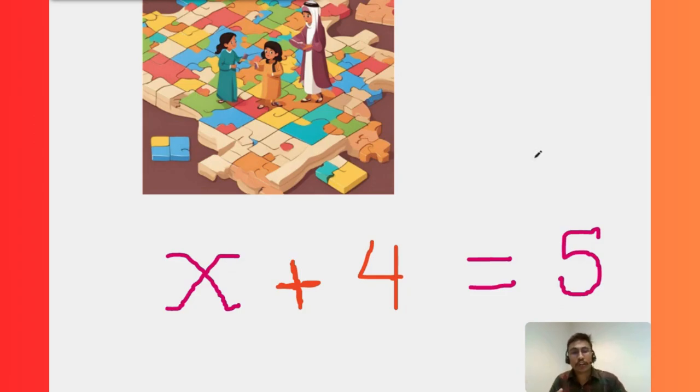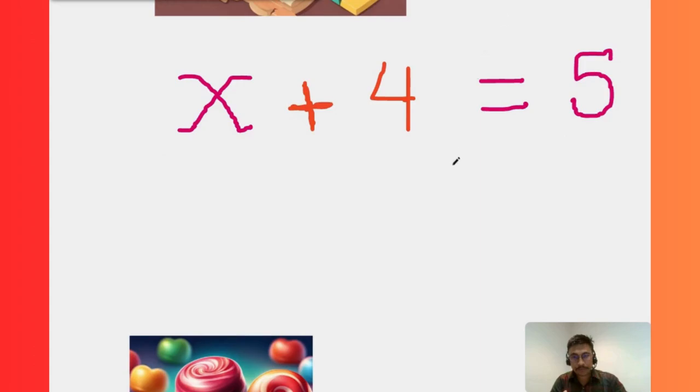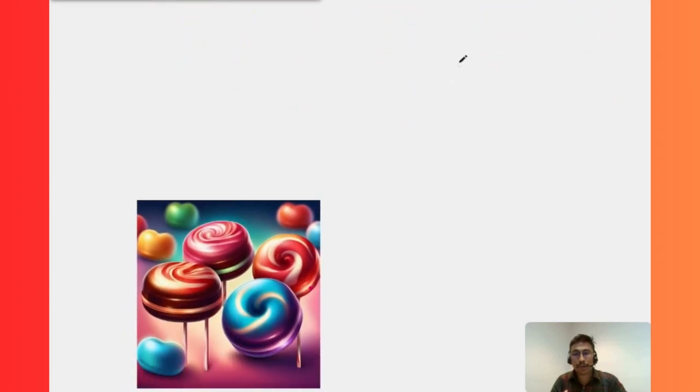So let me give an example for this. Suppose you have four candies. You can connect this with candies. You have four candies and your friend gave you some more candies. We don't know how many candies are given to you, but your friend gave you some more candies and now your total number of candies equals five.